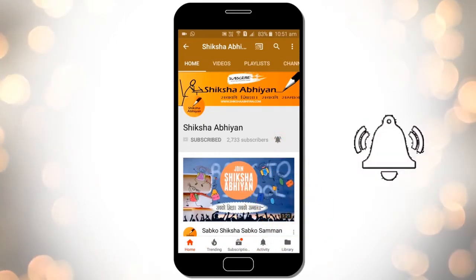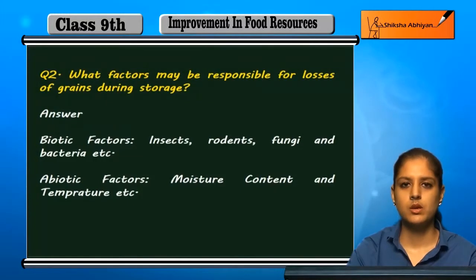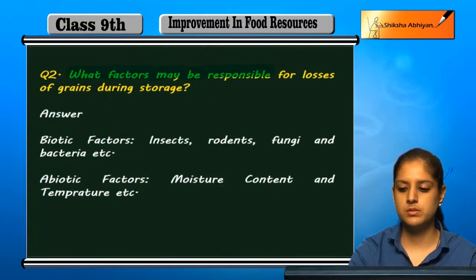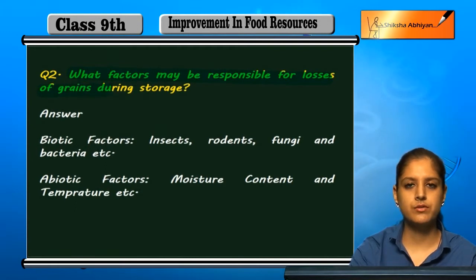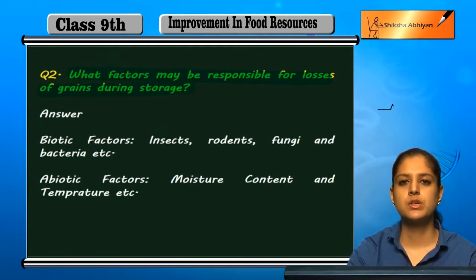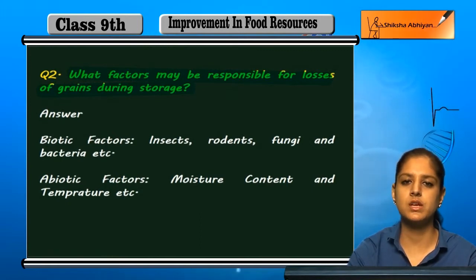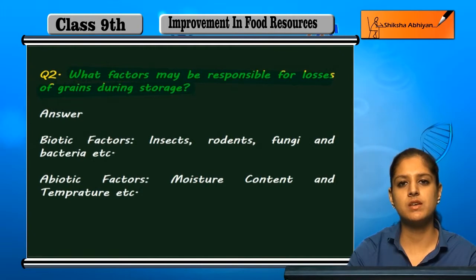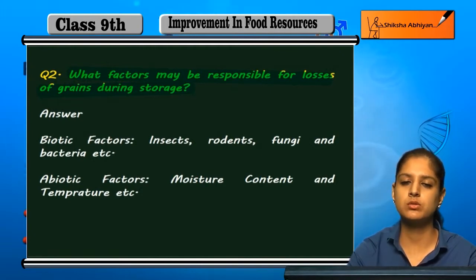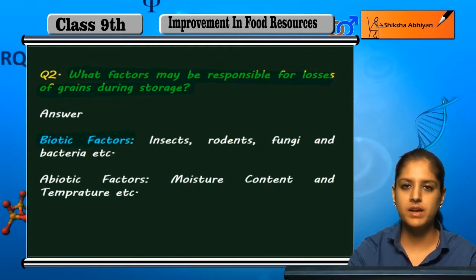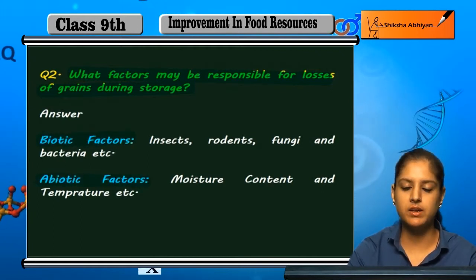Question 2: What factors may be responsible for losses of grains during storage? When you store grains, what type of factors can be responsible for grains becoming bad or lost? There are two types of factors: biotic factors and abiotic factors.